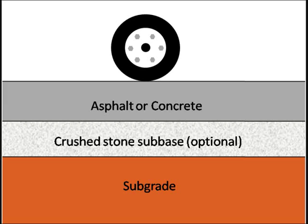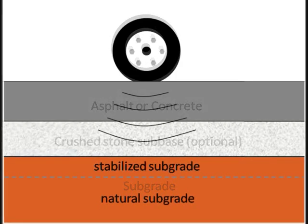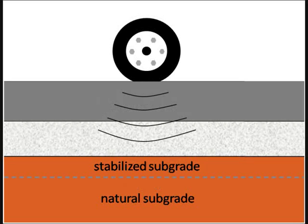Layers of intermediate stiffness composed of crushed stone may be included between these layers. The subgrade is often improved through compaction and the addition of one or more soil improvement agents. This video describes how the top of the subgrade layer may be improved through the addition of chemical or cementitious agents, resulting in a stabilized subgrade.